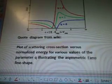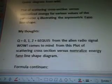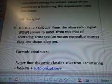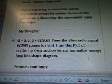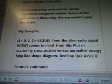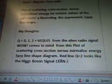My thoughts. Looking at this diagram below, guess what I'm going to say. Plot scattering cross-section versus normalized energy for various values of the parameter Q, illustrating the asymmetric Fano line shape. Q equals 0 and 1 and 2, plus the 6EQUJ5 from the alien radio signal WOW, comes to mind from this plot. The Q equals 2, the red line, looks like the Higgs boson signal from CERN, June 2012 data. I thought I did it but I didn't.